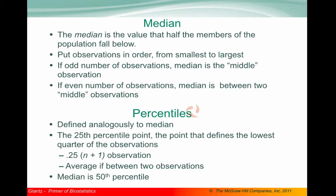The median is the value that half of the members of the population fall below. To compute the median, you simply put the observations in order from smallest to largest. If we have an odd number of observations, then the median is just the middle observation in that list of sorted numbers. If there is an even number of observations, then the median is between the two middle observations, or an average of those two middle observations.